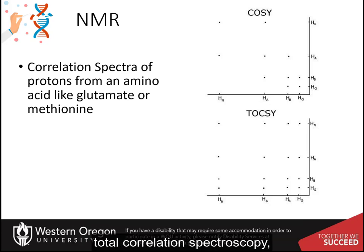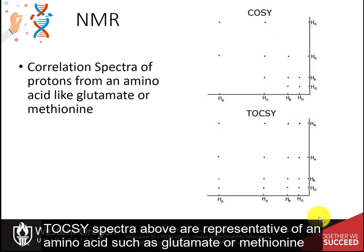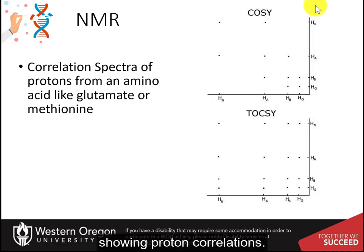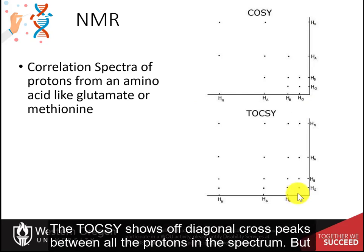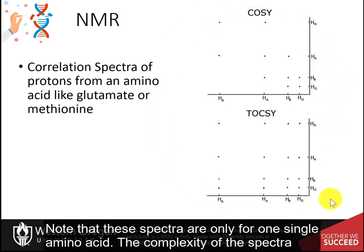Types include total correlation spectroscopy, TOCSY, and nuclear Overhauser effect spectroscopy, NOESY. The COSY and TOCSY spectra shown are representative of an amino acid such as glutamate or methionine, showing proton correlations. The TOCSY shows off-diagonal cross peaks between all the protons in the spectrum, but COSY only has cross peaks between neighbors. Note that these spectra are only for one single amino acid.